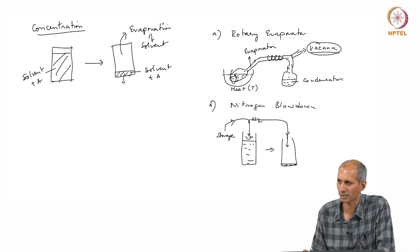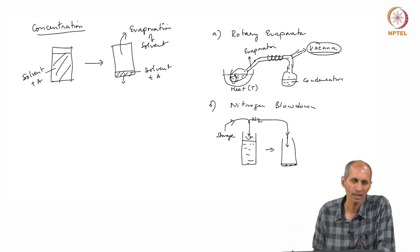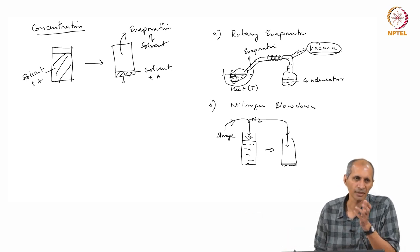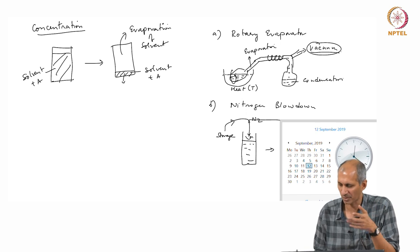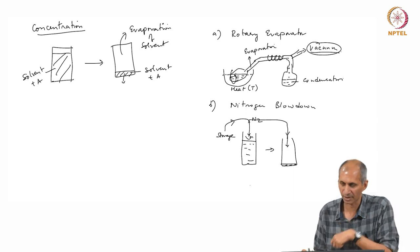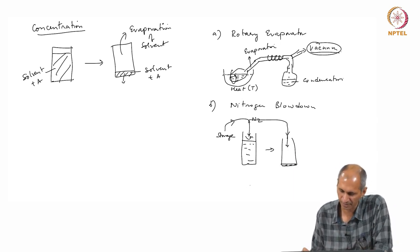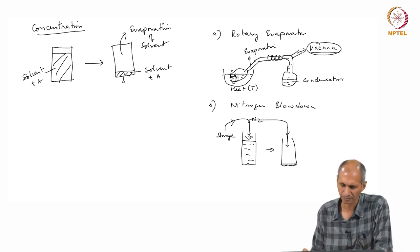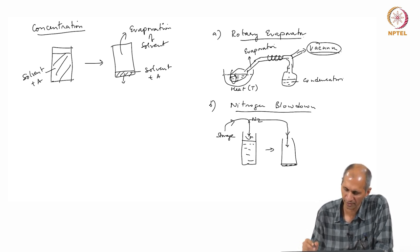Losses can occur due to incomplete extraction during the extraction process, and also during the concentration step. So what you recover in the instrument is less than what is in the original sample for these possible reasons. These are the two main ways we perform concentration: rotary evaporator and nitrogen blowdown.